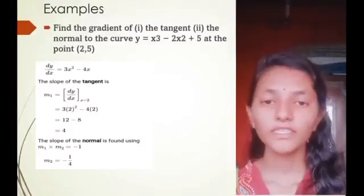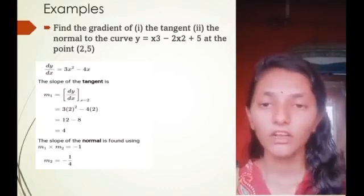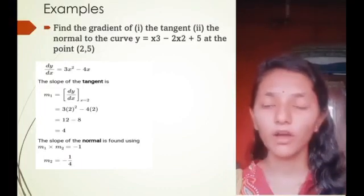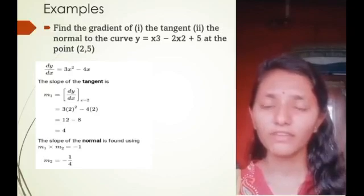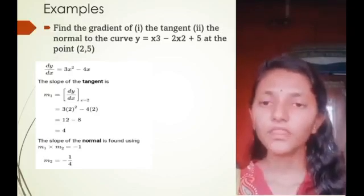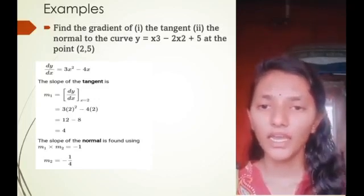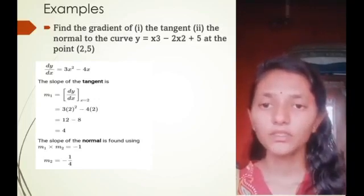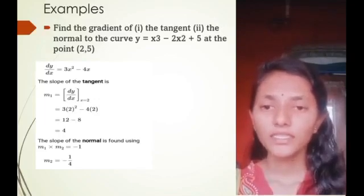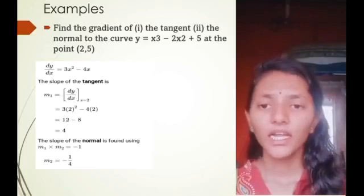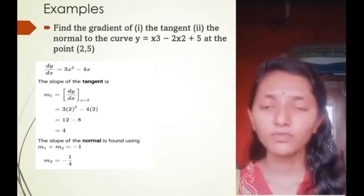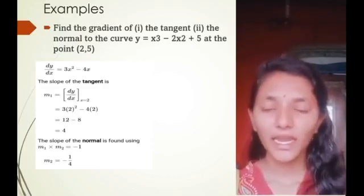Next point of my presentation is an example on tangent and normal. Find the gradient of the tangent and normal to the curve y = x³ - 2x² + 5 at the point (2, 5). Solution: dy/dx = 3x² - 4x. The slope of the tangent is m1 = dy/dx at x = 2, which equals 3(2)² - 4(2) = 12 - 8 = 4.